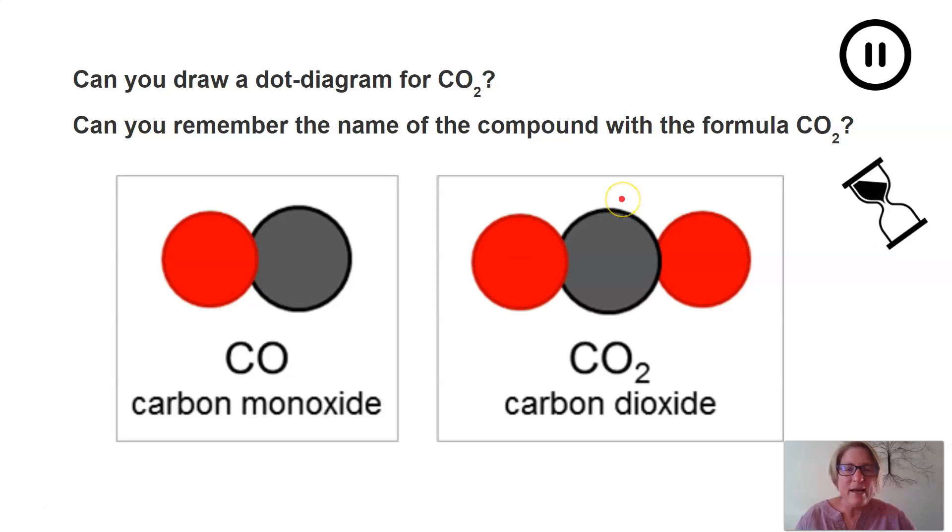Again, just a reminder how important it is that we look at the ratio of atoms of elements when they're combined to form a compound, because if we have a look at carbon monoxide, the subscript here is nothing, which means there's one atom of carbon combined with one atom of oxygen. And then we make a compound known as carbon monoxide.